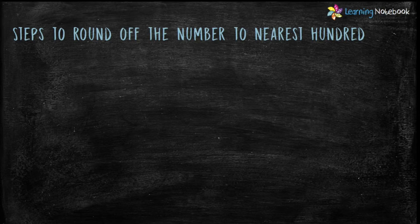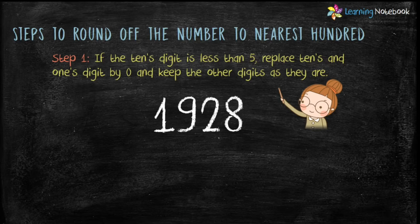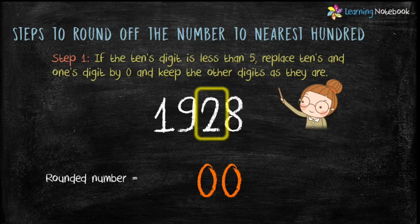Let's see the steps to round off a number to the nearest hundred. Step 1: if the tens digit is less than 5, replace the tens and ones digits by 0 and keep the other digits as they are. For example, the number is 1928. Here the tens digit is 2, which is less than 5. So replace 2 and 8 by 0 and keep the remaining digits as they are. Therefore the rounded number is 1900.